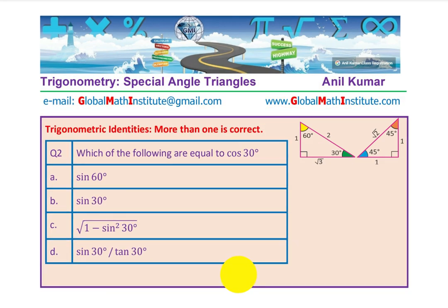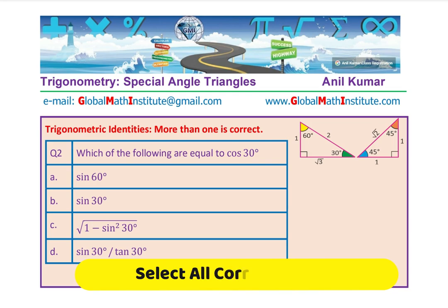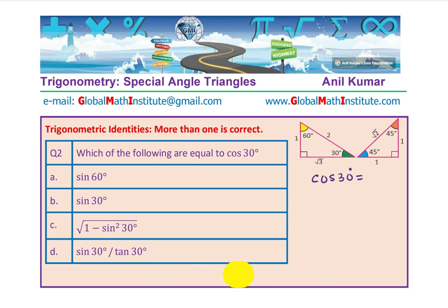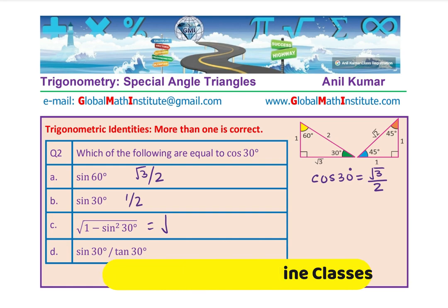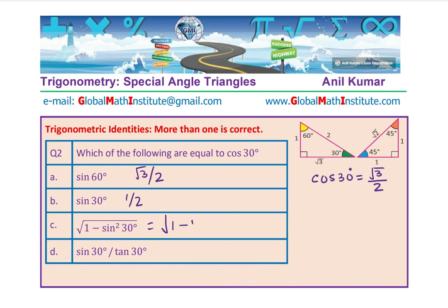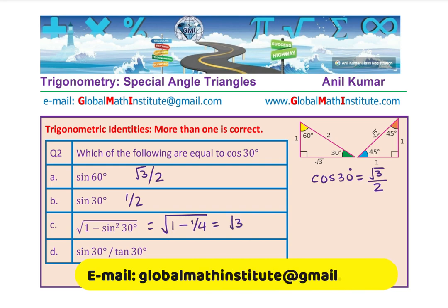Let's move on to question number 2. The question is: which of the following are equal to cos30 degrees? Cos30 equals square root 3 over 2. Sin60, looking from that angle, the opposite side is square root 3, so sin60 also equals square root 3 over 2. Sin30 is just one half. The expression square root of 1 minus sin squared 30 gives square root of 1 minus 1 over 4, which simplifies to square root 3 over 2.